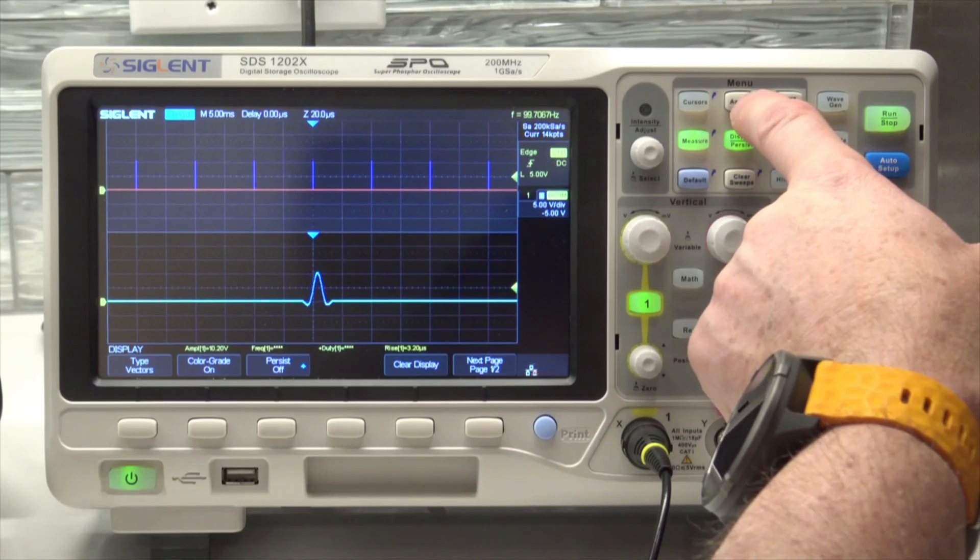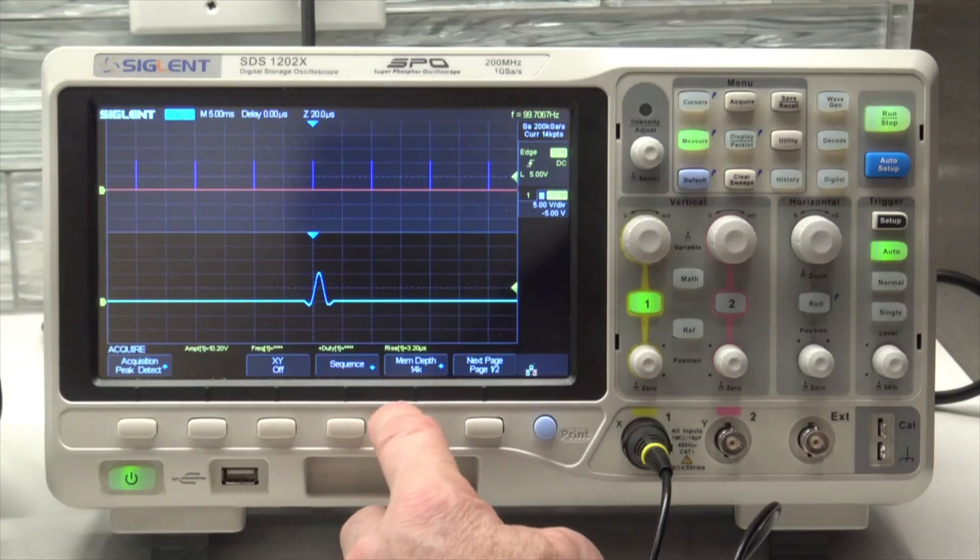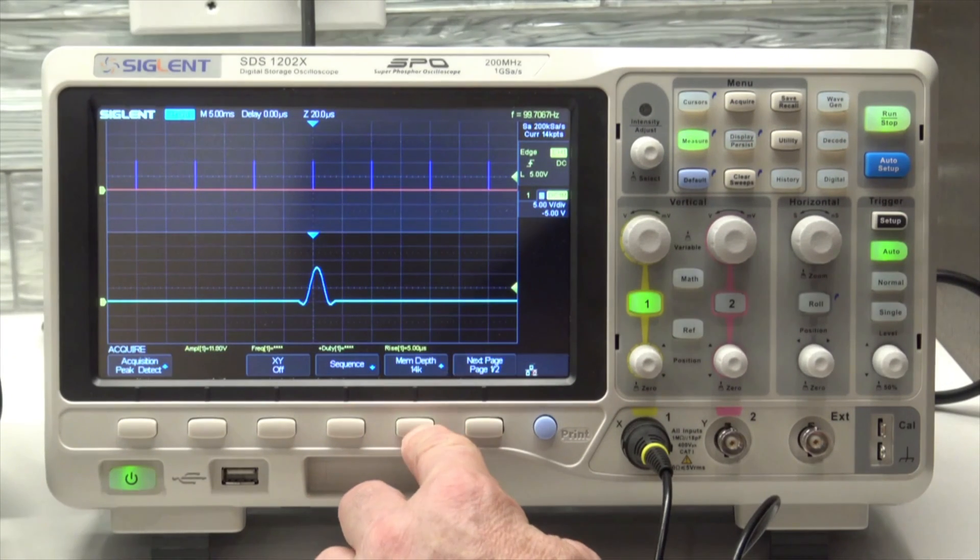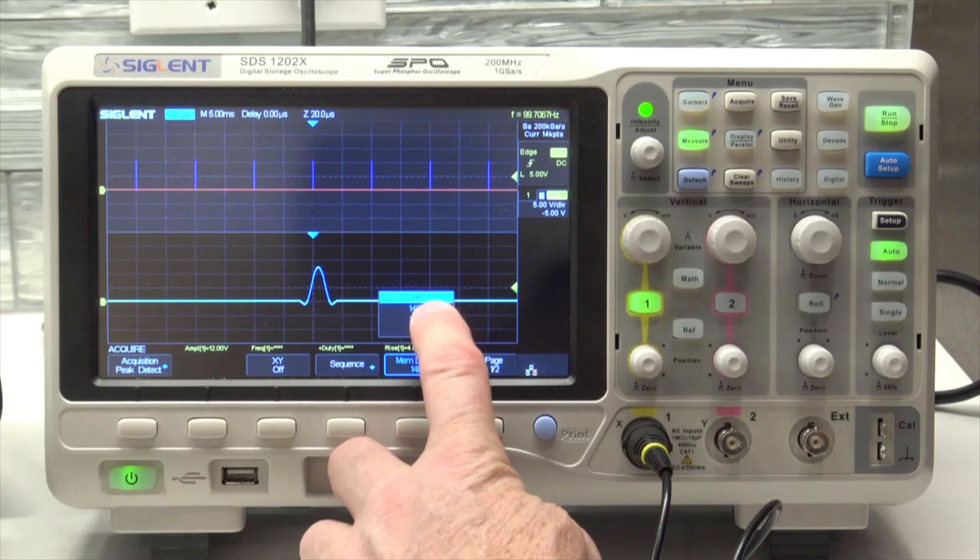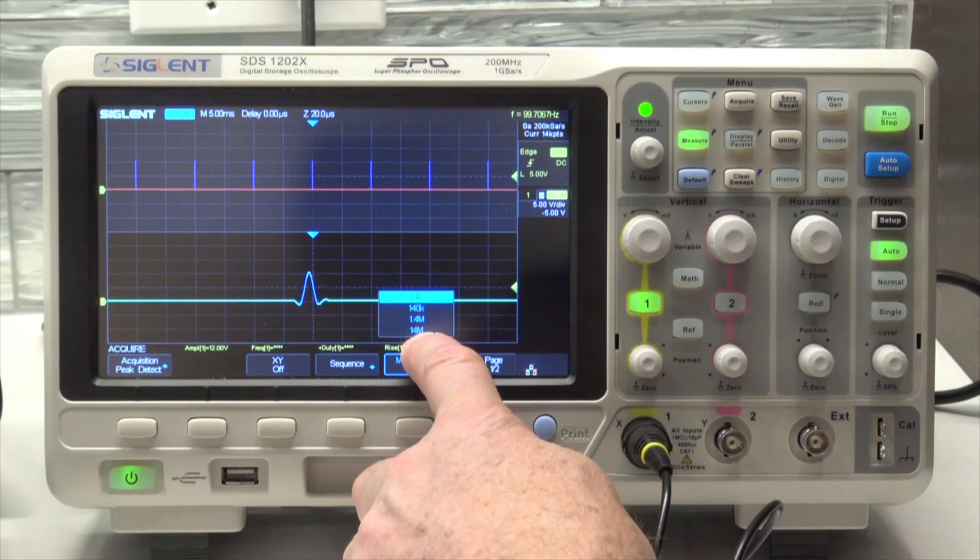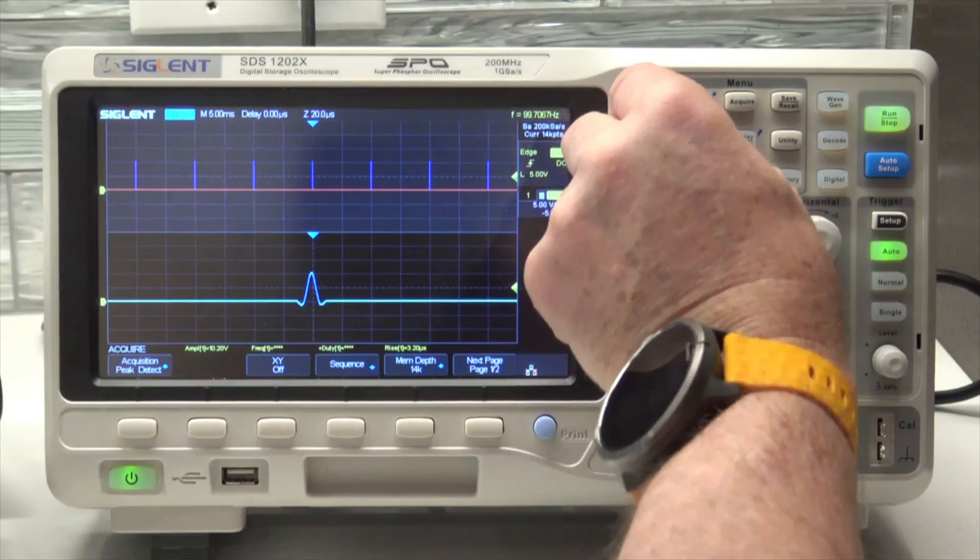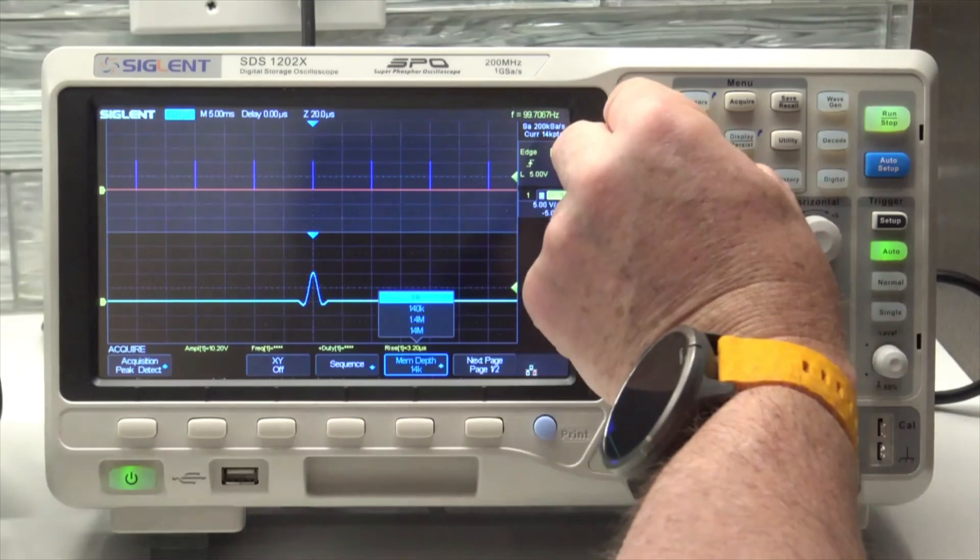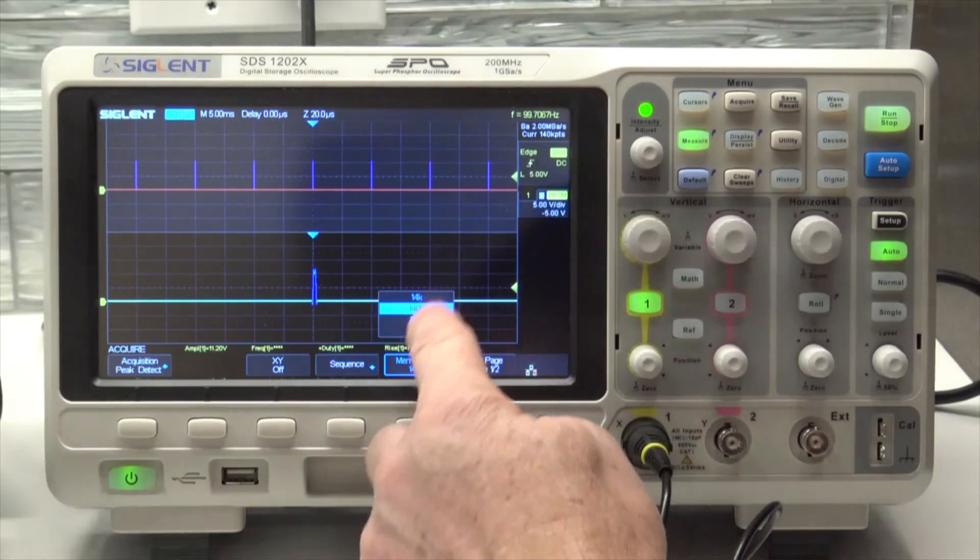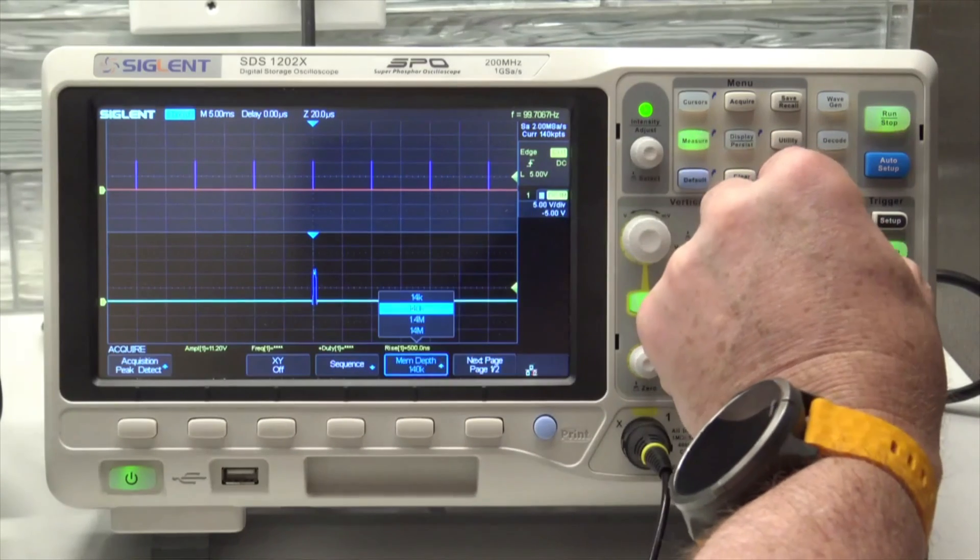I'm going to go to my acquire menu and check my memory depth. It's only 14k points, and I can go up to 14 million. So I can toggle this or come down and select the next one. Now it looks a little more square.